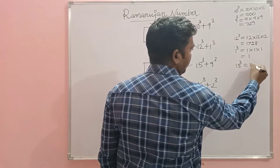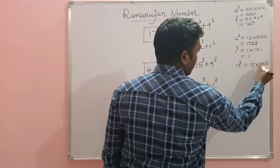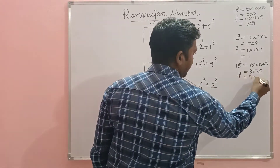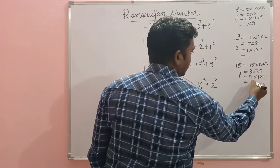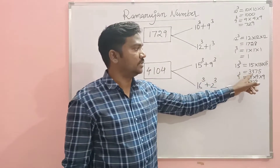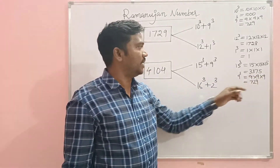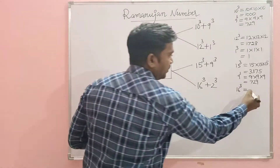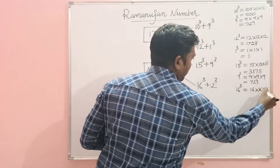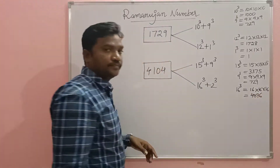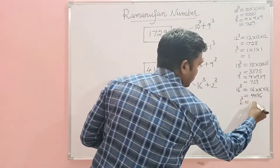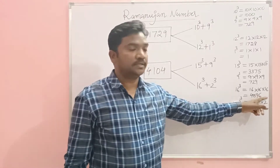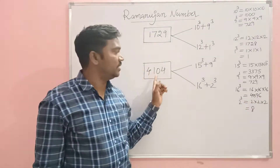15 cube is 15 × 15 × 15 = 3375. 9 cube is 9 × 9 × 9 = 729. So 3375 + 729 = 4104. 16 cube is 16 × 16 × 16 = 4096. 2 cube is 2 × 2 × 2 = 8. So 4096 + 8 = 4104.